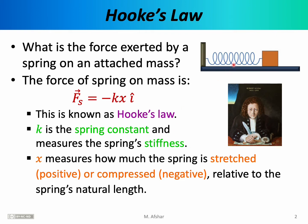The spring constant k characterizes the spring's stiffness. If you have a very strong, stiff spring, then its k value will be a large number. But if it's a wimpy, thin spring, then its k value is going to be a small number. x measures how much the spring is stretched or compressed. For this scenario using a standard coordinate system, if we pull the block to the right, stretching the spring, then x is going to be a positive number. But if we push the block to the left, compressing the spring, then x is going to be a negative number.